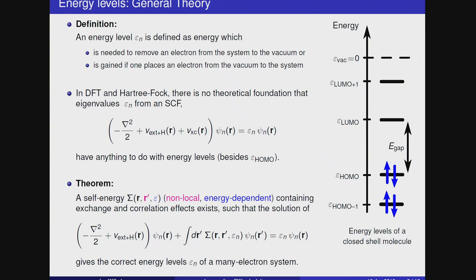So we are interested in computing energy levels of a molecule or a material. Such an energy level is defined as, for example, bringing an electron from some state to the vacuum level, and the energy of this level is then this energy difference. Also there is a definition for unoccupied states. The energy is the energy you would get if you would bring an electron from the vacuum level to an unoccupied level. Now it's a question how you can compute these energy levels of a molecule or a material. You could look in the literature and find the self-consistent field equation of DFT.